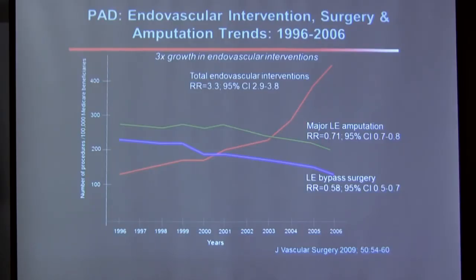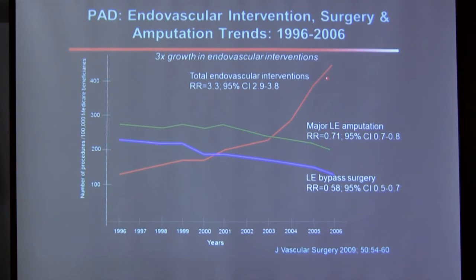From 1996 to 2006, endovascular interventions — balloons and stents — increased dramatically while open bypass surgery declined, mirroring trends in cardiac care. During the same period, amputation rates declined, suggesting that more effective earlier treatment may prevent limb loss.